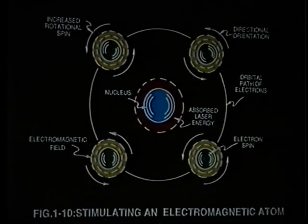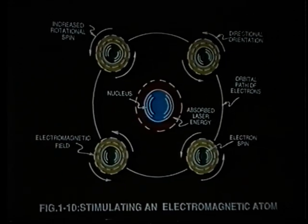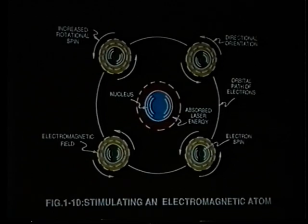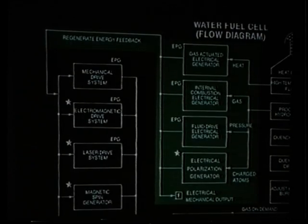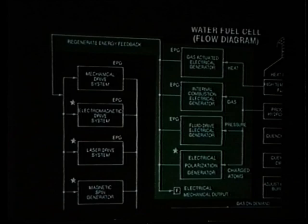This is an example of the laser energy being absorbed by the nucleus, causing electrons to go to a higher energy state. When that occurs, as it migrates from the nucleus, the electron spin increases, and when it increases you are now increasing its electromagnetic fields.